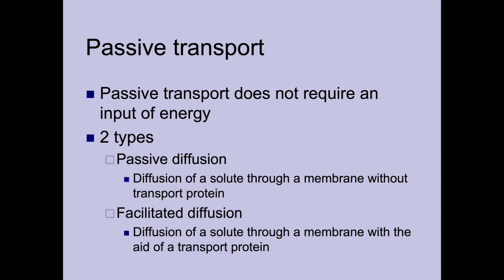We have two basic forms of passive transport. First, passive diffusion, where a solute can pass through a membrane and does not require any kind of protein to carry it through. This would be like when we looked at the slide showing membrane permeability levels — CO2, oxygen, nitrogen, those gases, anything that can freely move across the membrane. It does so in the direction of its concentration gradient.